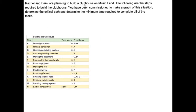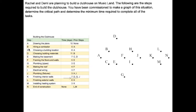The final part. Rachel and Demi are planning to build a clubhouse on Musicland. You have been commissioned to make a graph of this situation, determine the critical path, and determine the minimum time required to complete all of the tasks. I'm going to start with A. A goes to B — B has A as a prior step. A also goes to C. B goes to D. E has C and D as prerequisites, so I put E here. Then we have F, which has E as a prerequisite — E goes to F. E also goes to G.